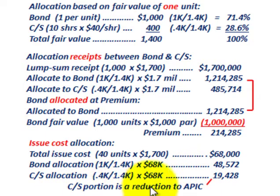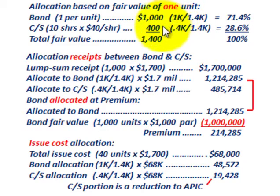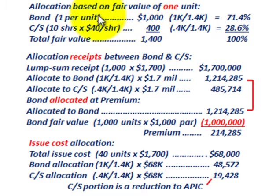Remember, the common stock portion of issue costs is a reduction to additional paid-in capital. We've done our allocation between receipts and issue costs based on this proportional allocation. The proportional method requires determining fair value for each security, taking the total, then dividing each security's fair value by the total fair value to get the proportional amount — expressed here as a fractional amount.